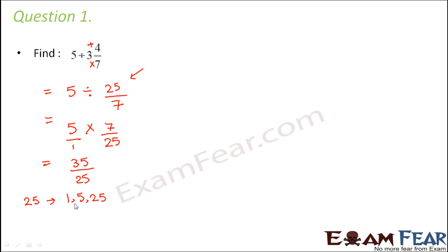Factors of 35 are 1, 5, 7, and 35. Which is the highest common factor? It is 5. So let us divide the numerator and the denominator by 5.